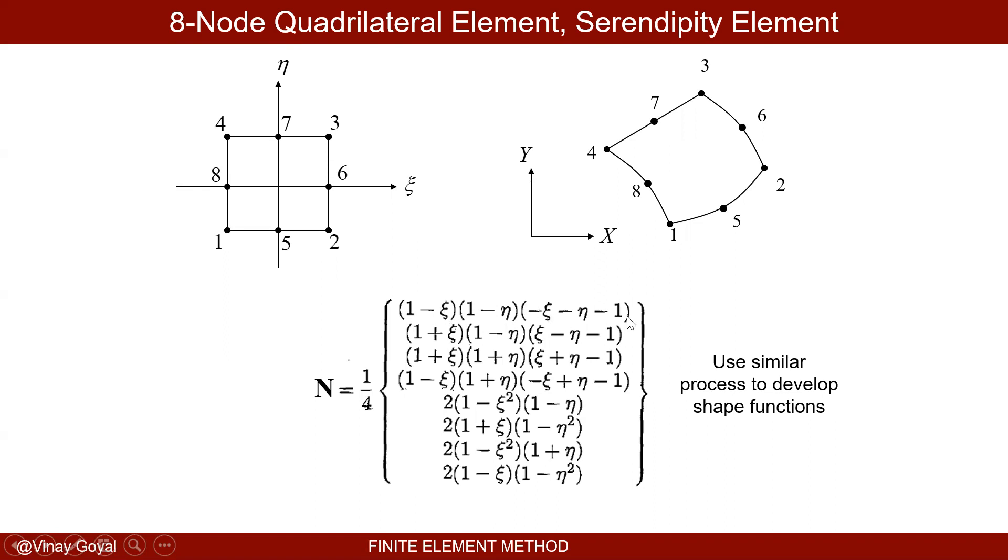You can check that this is zero at this node, this node, this node. You will also see that this is zero also at middle nodes. So the Kronecker delta property applies where the shape function is one at this node, zero at all the other nodes. And I can then say the same thing about each of these shape functions. And if I add them up, I'll get one.